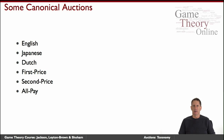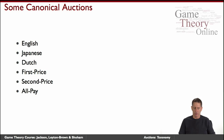So what are the kinds of auctions we see? In fact, the space of auctions is infinite. Here are some examples that begin to illustrate the richness of the space. We'll go over those in order: the English auction, the Japanese, the Dutch, the first price sealed bid auction, the second price sealed bid auction, and finally the all-pay auction.